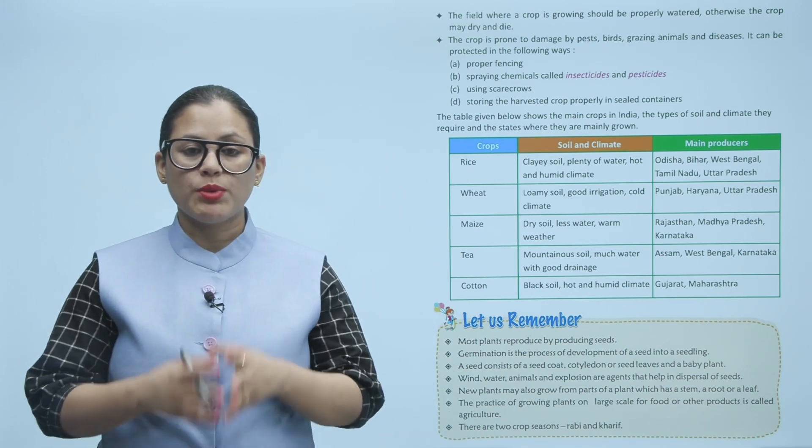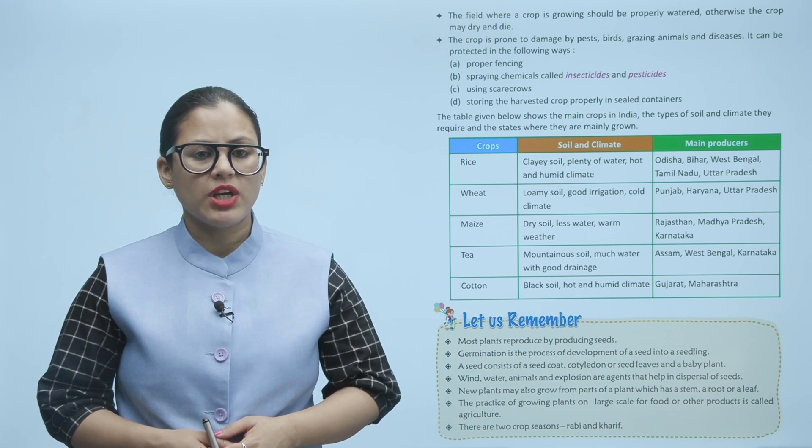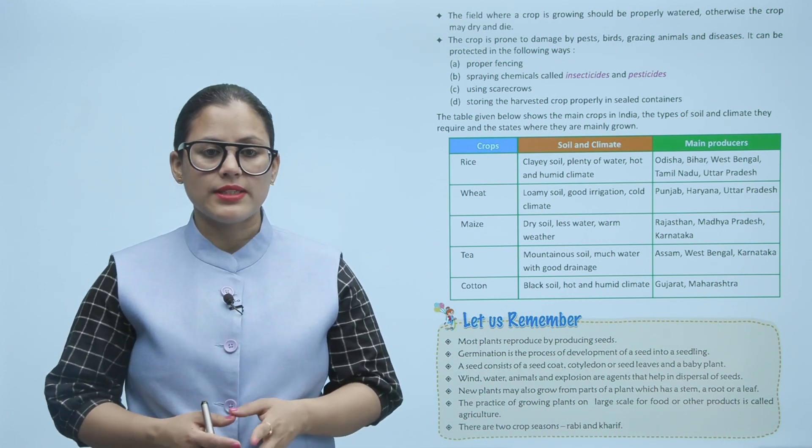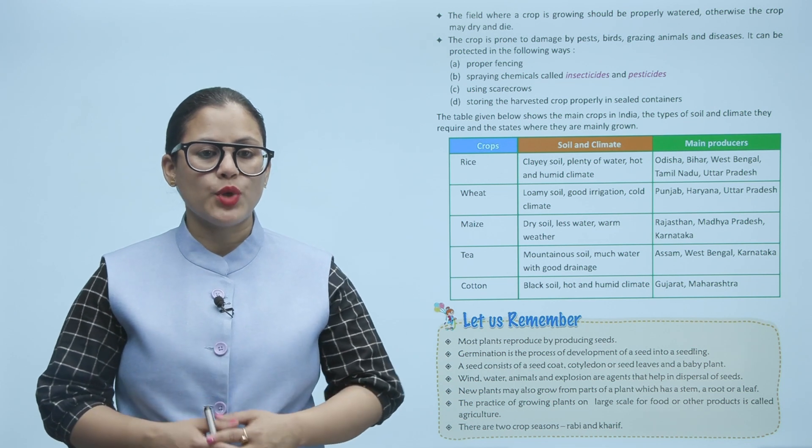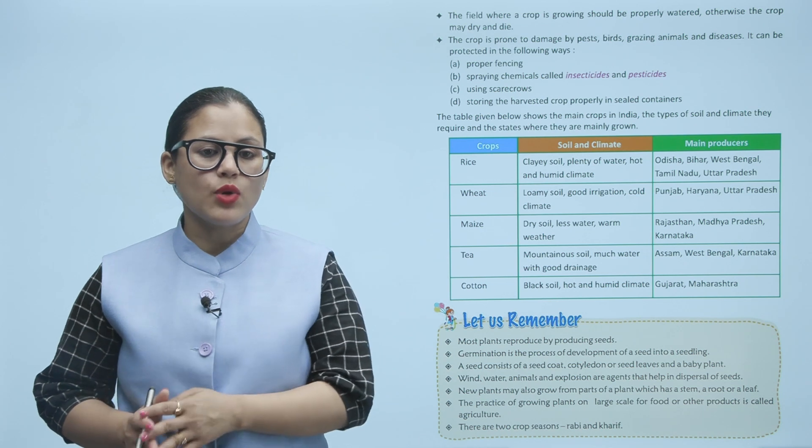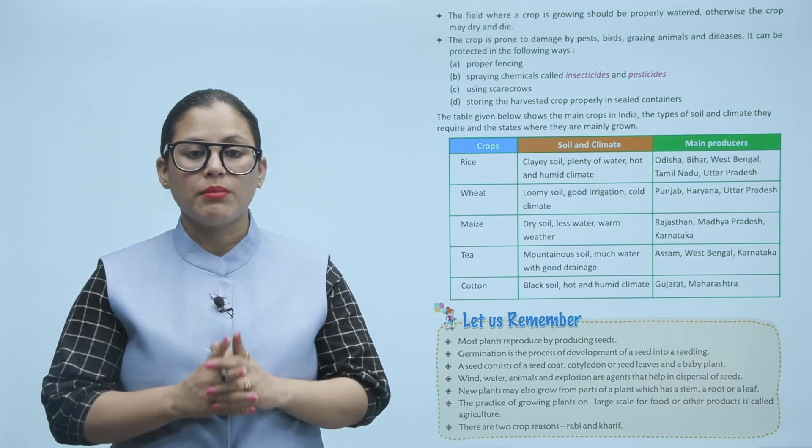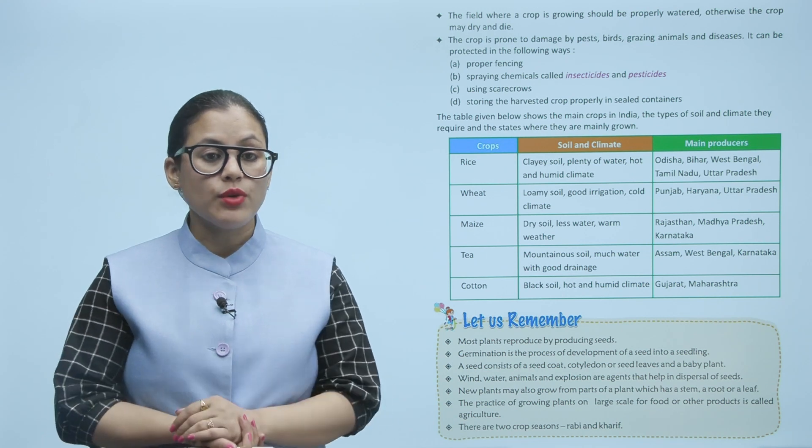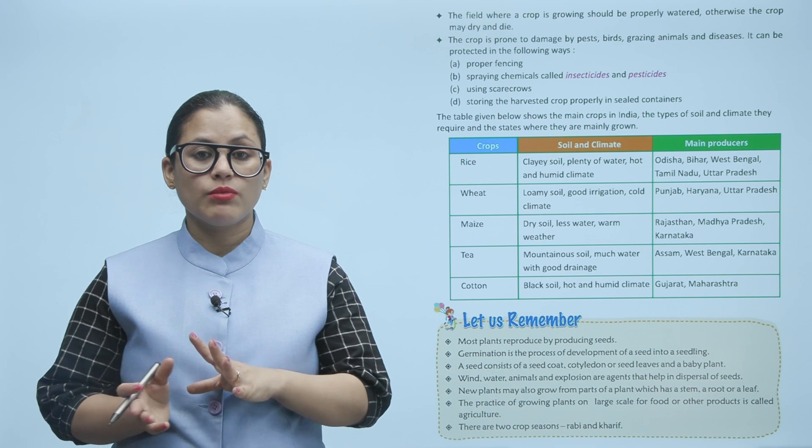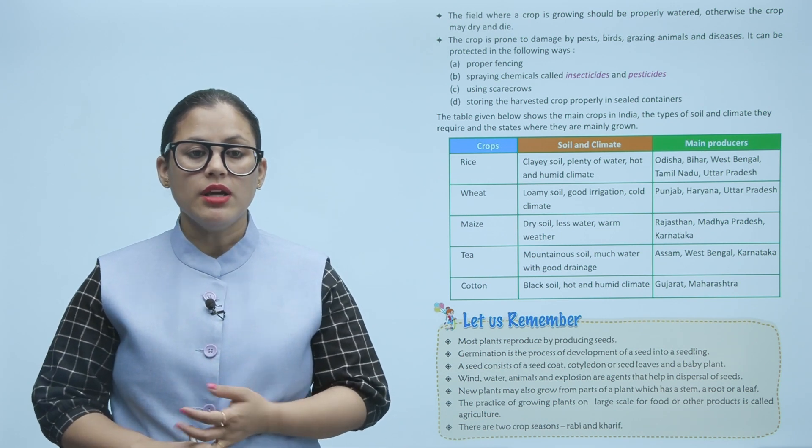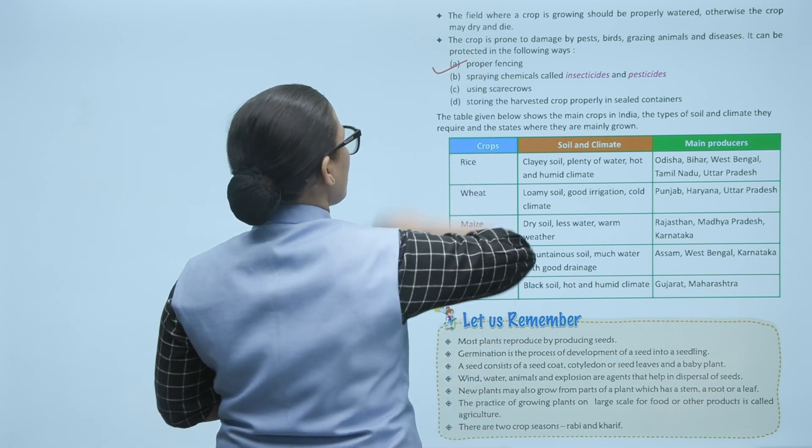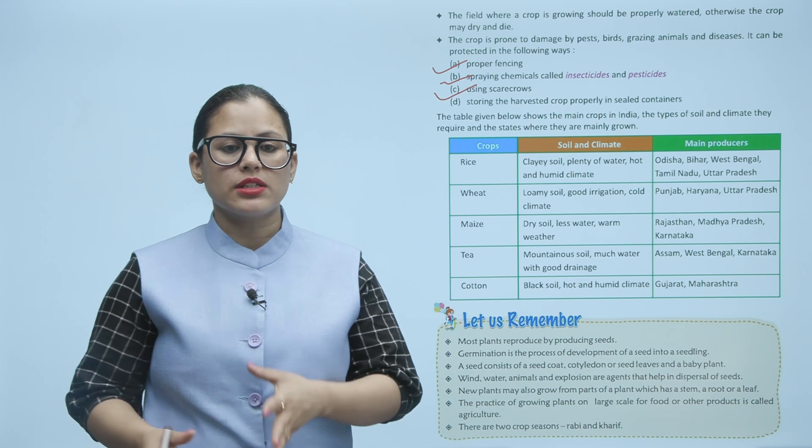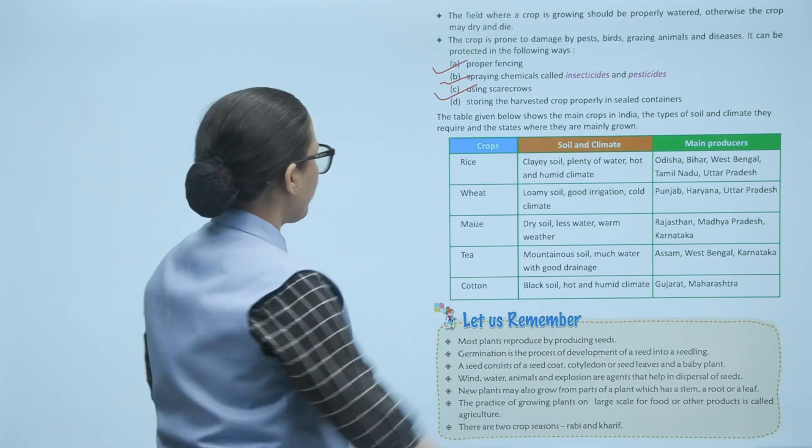The field where a crop is growing should be properly watered, otherwise the crop may dry and die. The crop is prone to damage by pests, birds, grazing animals, and disease. It can be protected in the following ways: proper fencing, spraying chemicals called insecticides and pesticides, using scarecrows, storing the harvested crop properly in sealed containers. The table given below shows the main crops in India, the types of soil and climate they require, and the states where they are mainly grown.